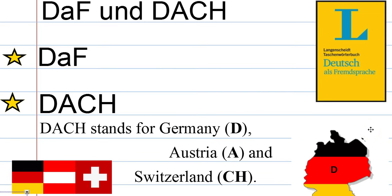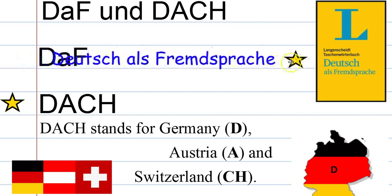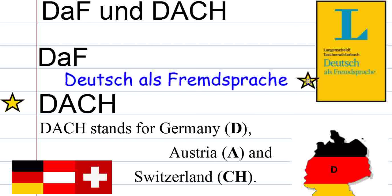If you're going to be studying German as a language, these are two terms you're going to want to pay attention to. The first is DaF, which literally means Deutsch als Fremdsprache — German as a foreign language. So that means you're a non-native German speaker learning it as a foreign language, and you'll often find books specifically for DaF learners.